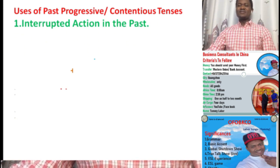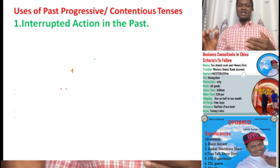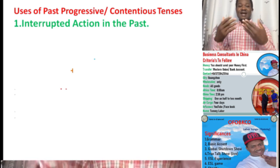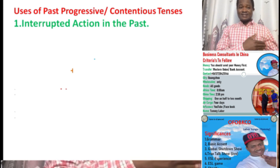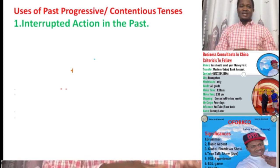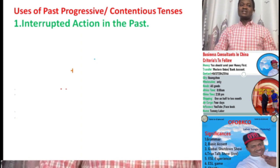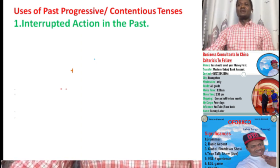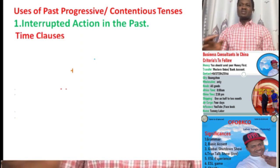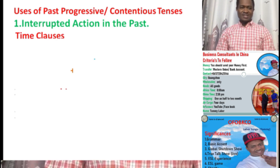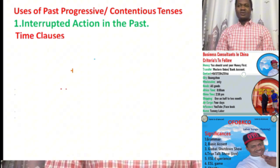Let's see some examples of how this interruption works. There is an action that is going on in the past, and then another action interrupts it — and that other action that interrupted is in the past simple. Let's see some examples here.